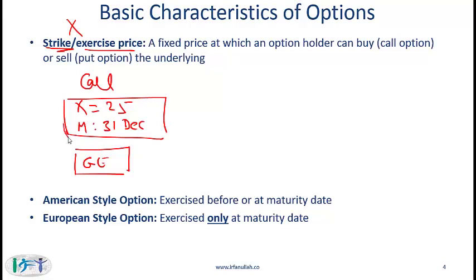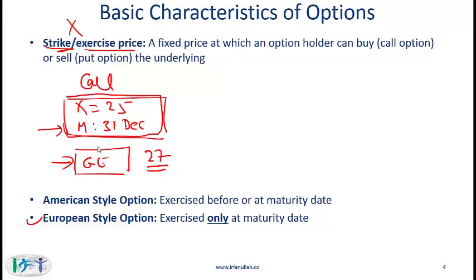What this means is the holder of this contract has the right to buy the underlying share for $25. Let's say this is a European style option, which can only be exercised on 31st December, and at 31st December the price of the underlying is $27. The long party will pay $25 to the short party and get the underlying, then sell it in the market for $27. So effectively the payoff is $2 in this simple scenario.